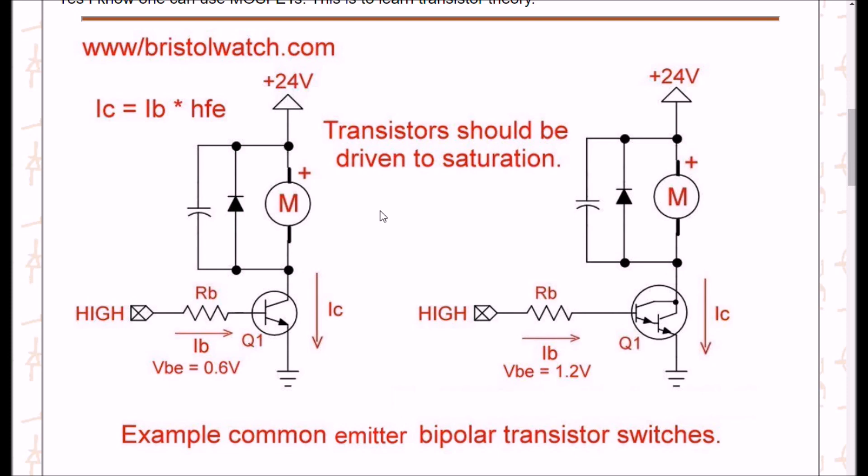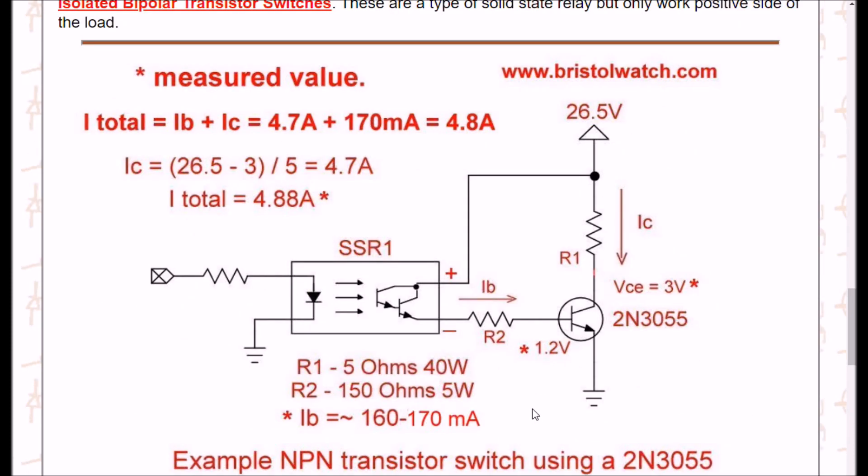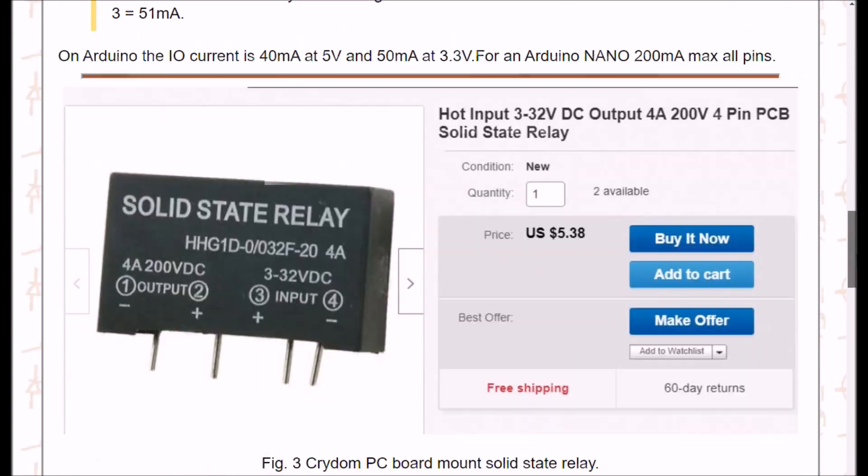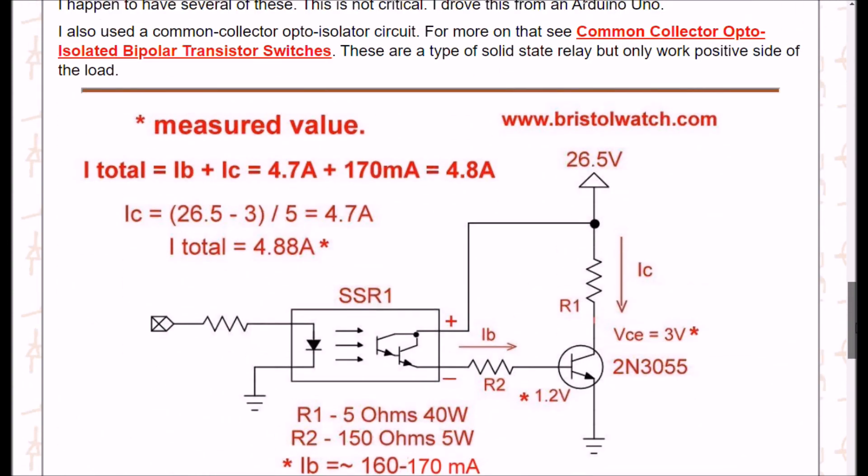All right, here are my test results for the 2N3055. This SSR1 symbol is just my generic symbol for either a solid state relay, such as the commercial one, or the one you could build with an optocoupler and a TIP120, etc. The voltage drop across the one that I used, which is that one there, is insignificant. I didn't put it into the calculation.